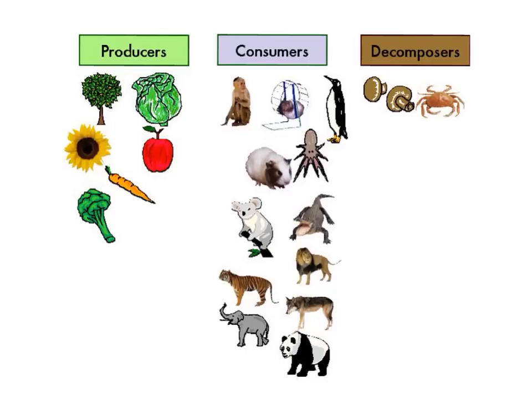Consumers: animals are called consumers because they cannot make their own food, so they need to consume or eat plants or other animals. There are three groups of consumers: herbivores — animals that eat only plants; carnivores — animals that eat only animals; and omnivores — animals that eat both plants and animals.